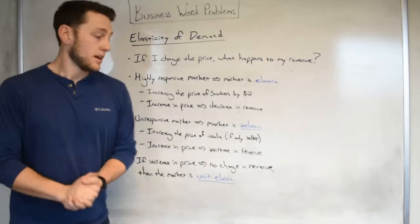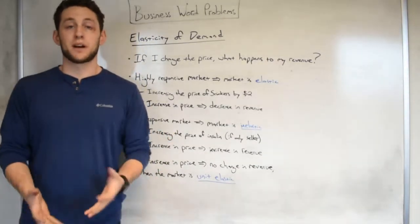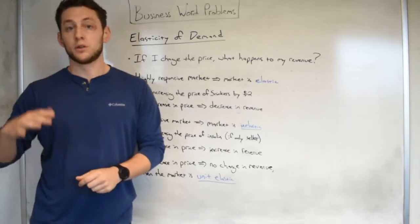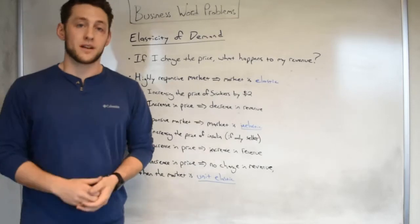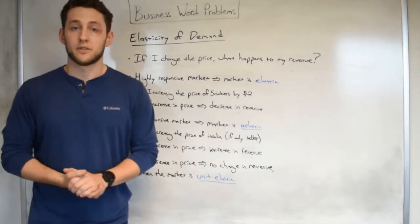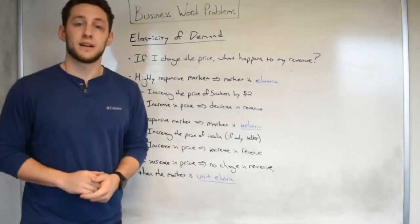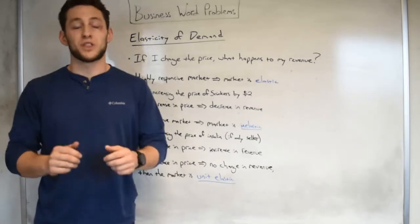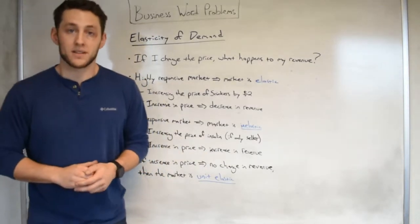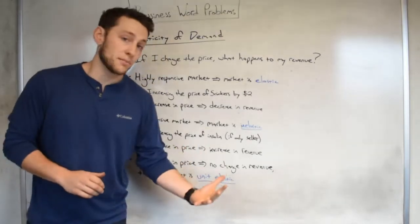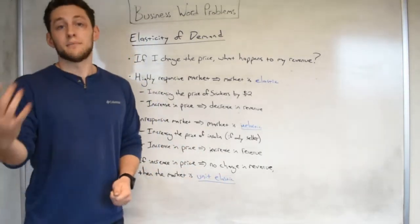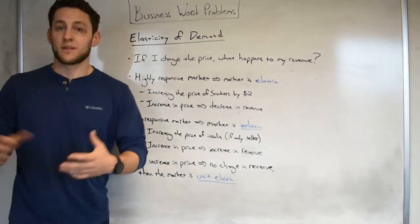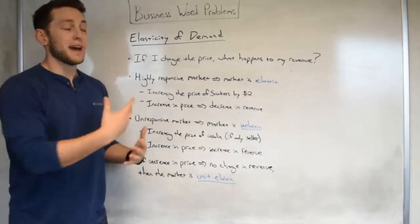Now, if the market is unresponsive, meaning I increase price and people still keep buying my product, we are going to call that an inelastic market. Think, if you are the only seller of insulin. If I raise up the price of insulin, the same customers still require that insulin provided there are no other providers. So by raising the cost up a couple of dollars, I will just keep on raking in the profit because they have no choice. Last but not least, we will call a market unit elastic if there is no change in revenue with an increase in price.